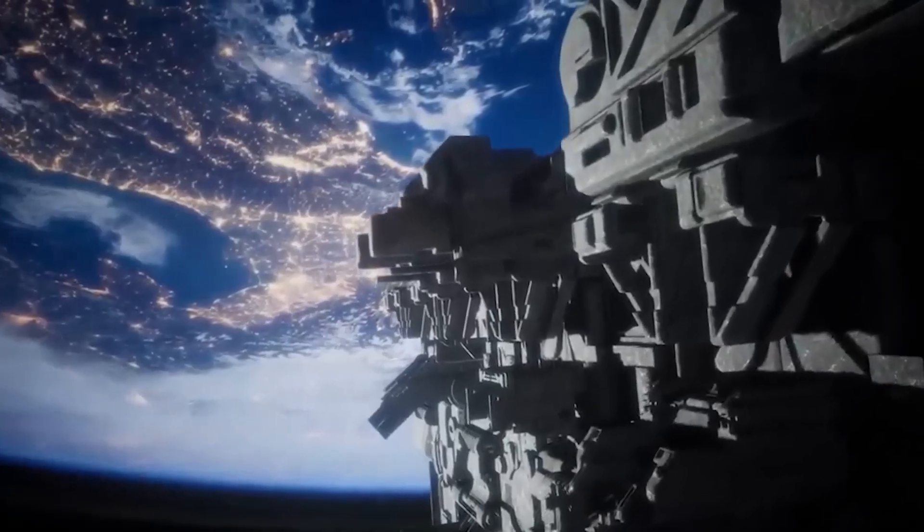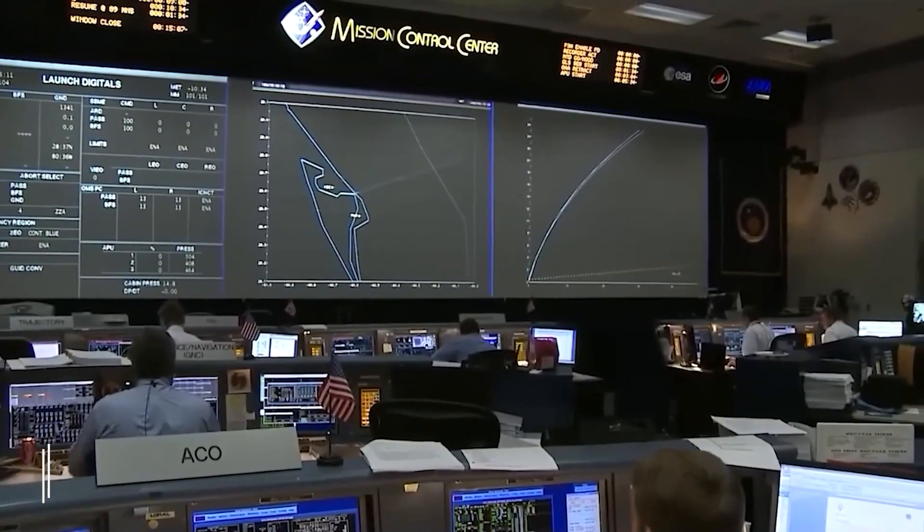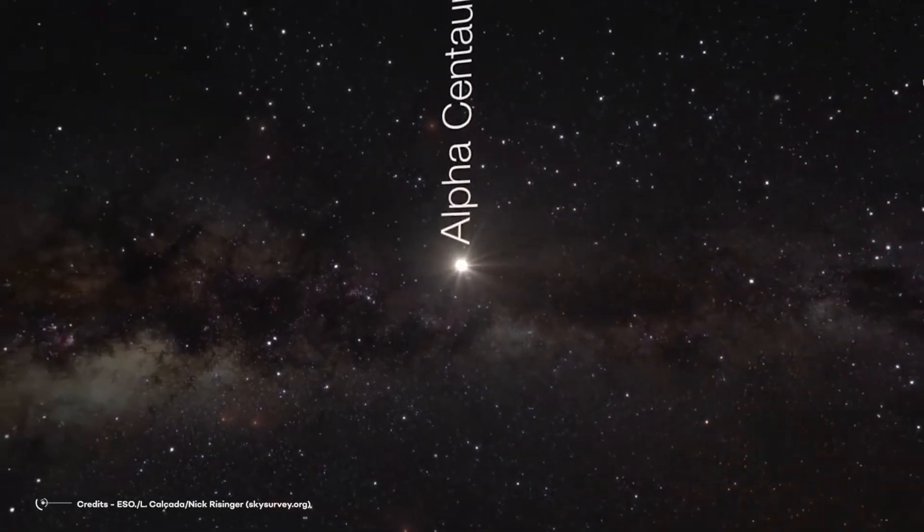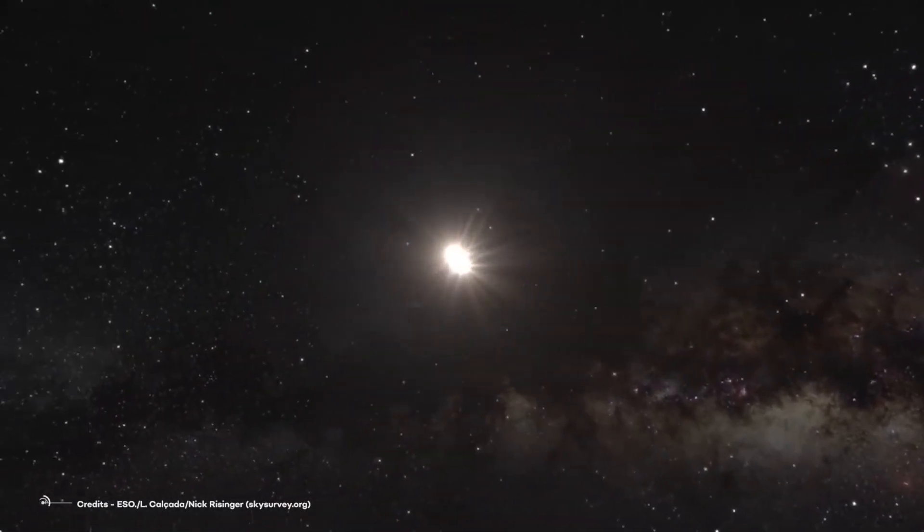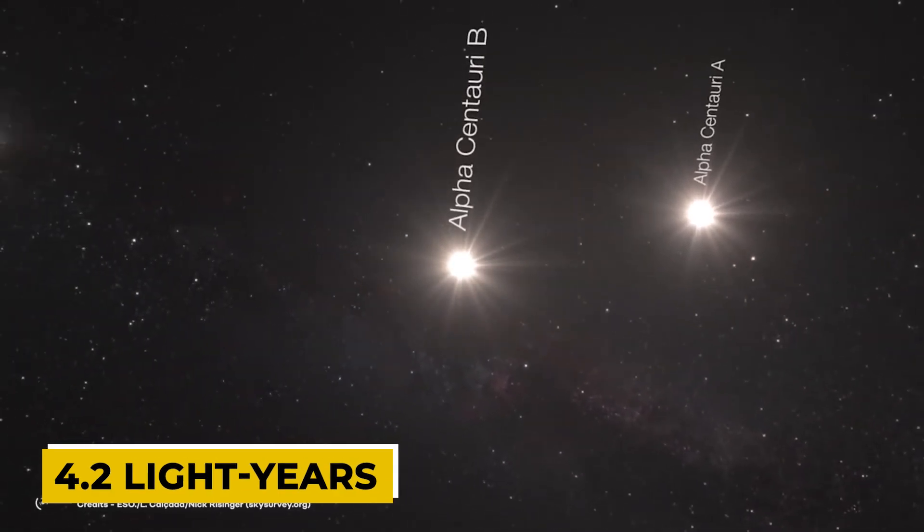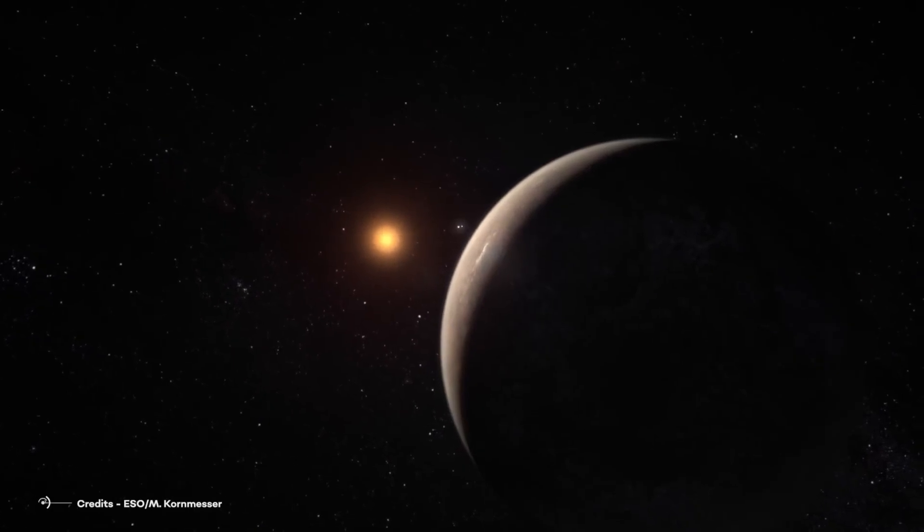The discovery of this star system was announced on August 24, 2016 by the European Southern Observatory. The planet in question, which orbits the star Proxima Centauri and is named Proxima b, is only 4.2 light-years from Earth, making it the closest known exoplanet to our solar system.